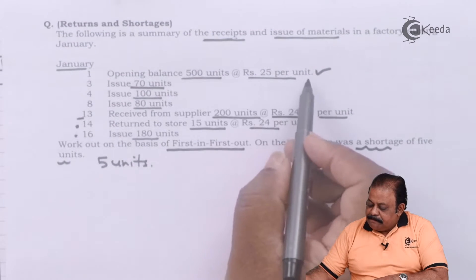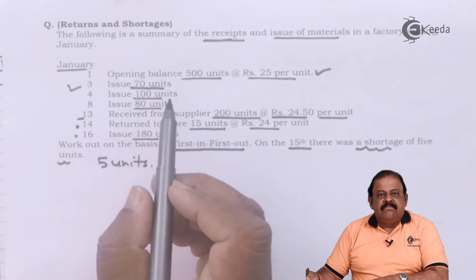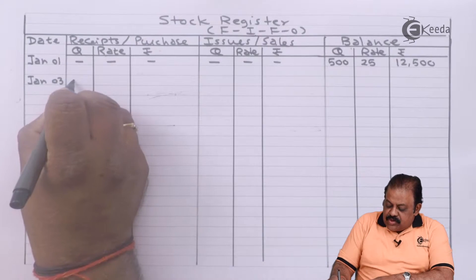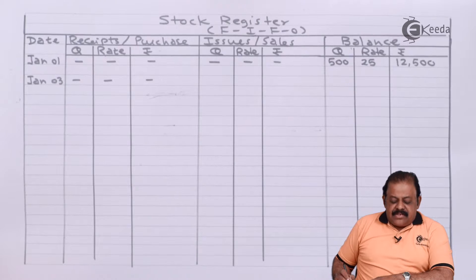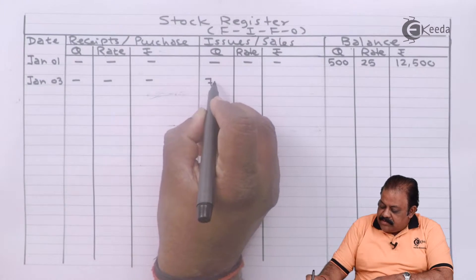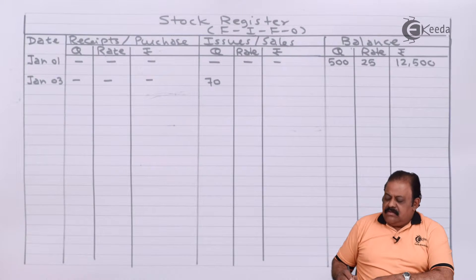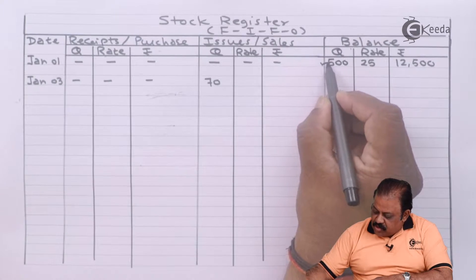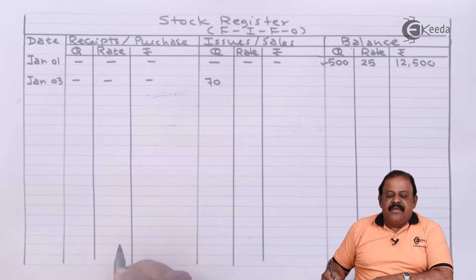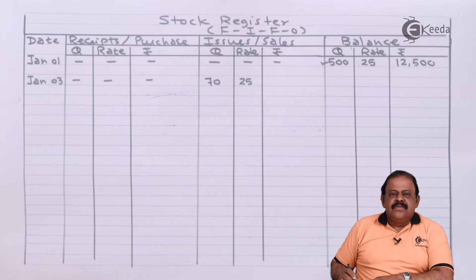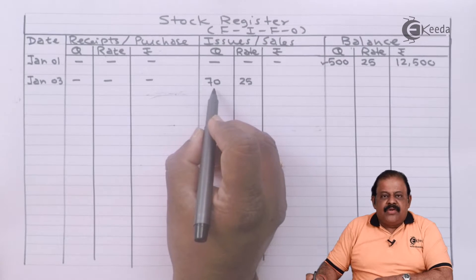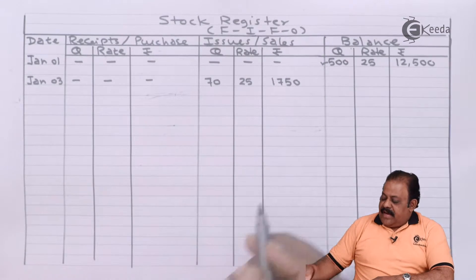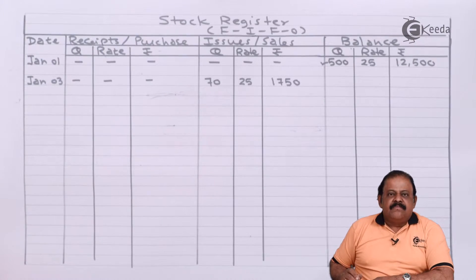Next, on 3rd January, there is an issue of 70 units. In the date column we record January 3rd. In the receipt column we put a dash. In the issues column, quantity is 70 units. Using FIFO, we check the rate: we have stock of 500 units at rupees 25, so the applicable rate is rupees 25. The value of stock issued is 70 multiplied by 25, which equals rupees 1,750.